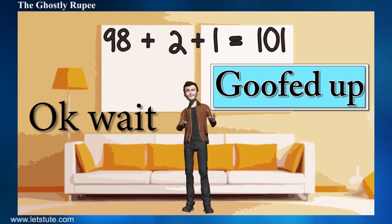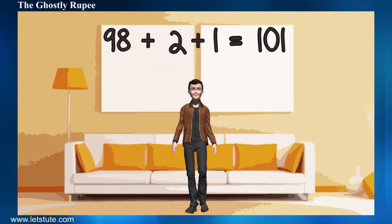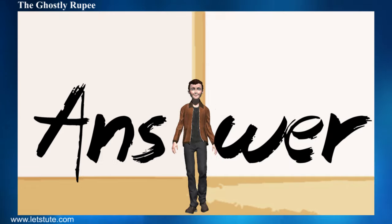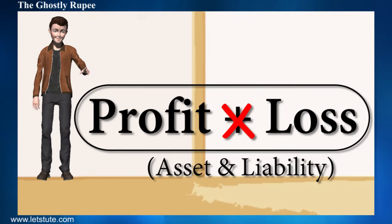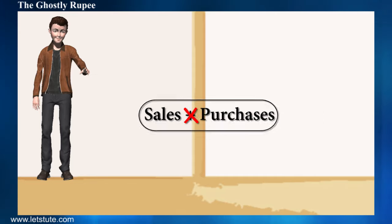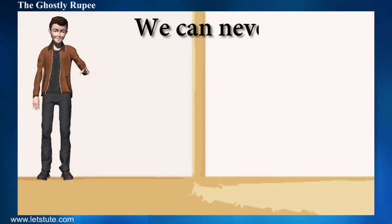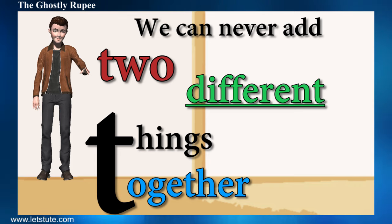We have goofed up again. But where are we going wrong? It's just simple addition after all. Let's finally jump to the answer that we are all looking for. Can we ever add profits and losses together? Can we add sales and purchases together? We can never add two completely different things together.